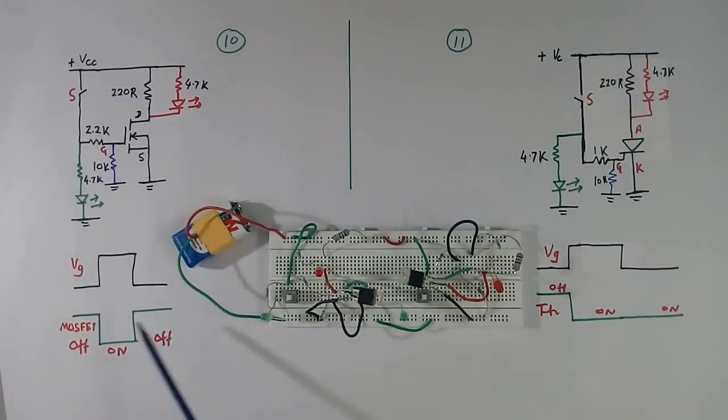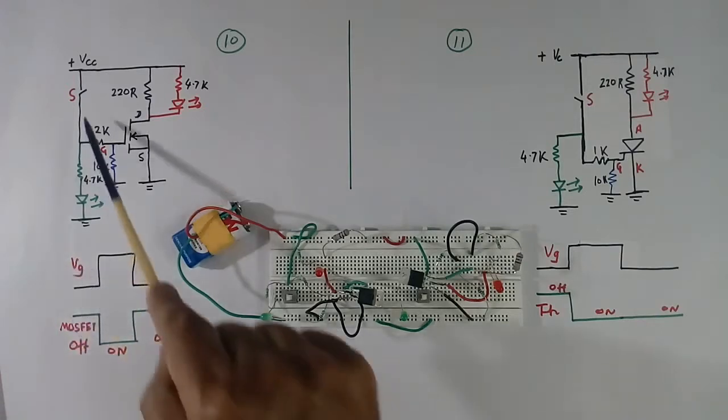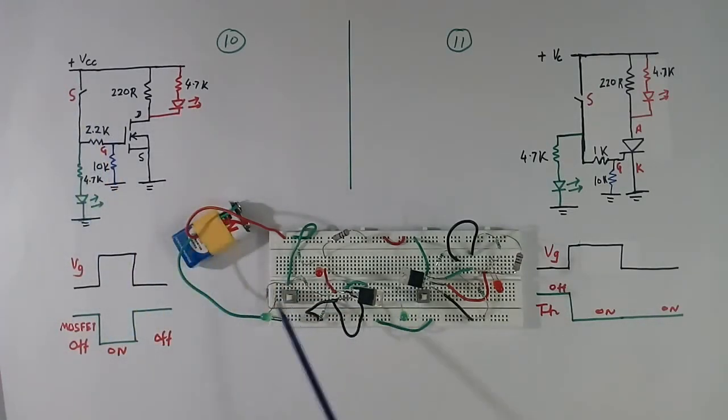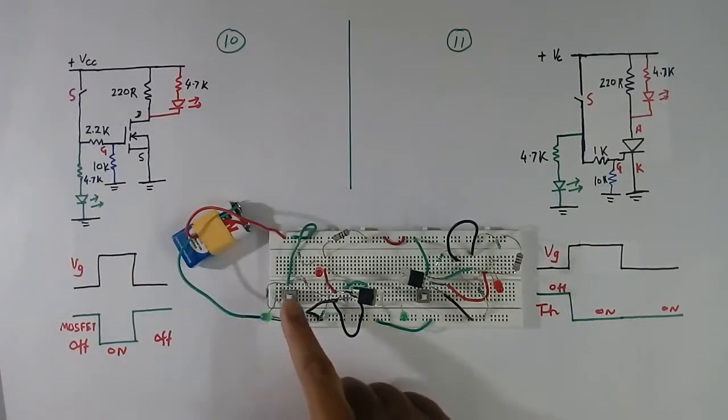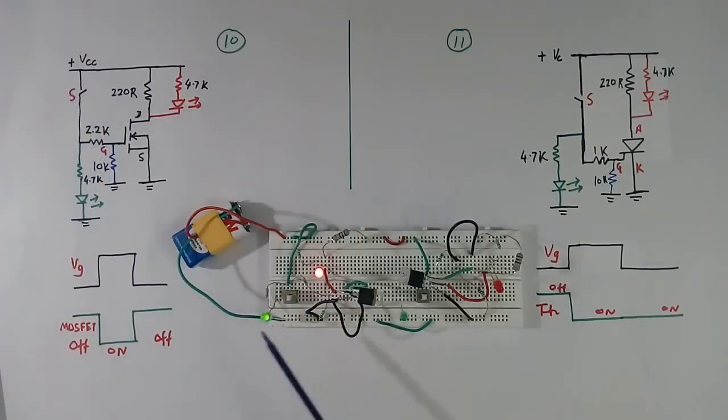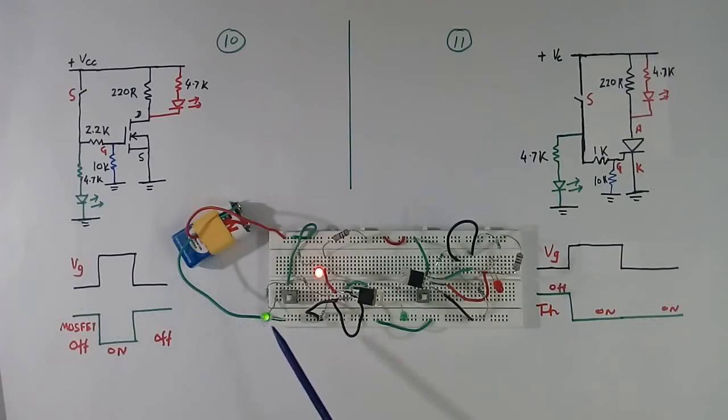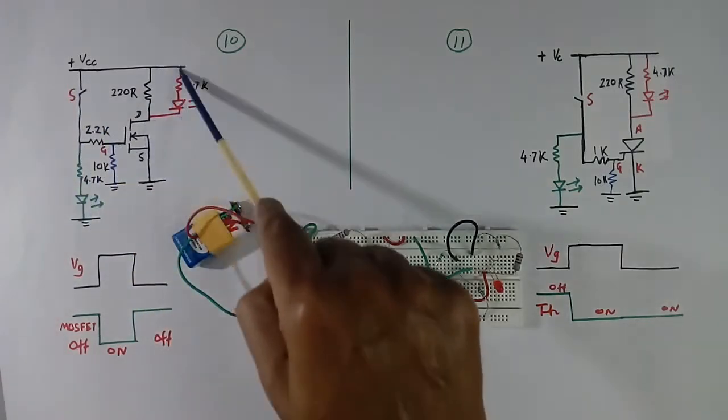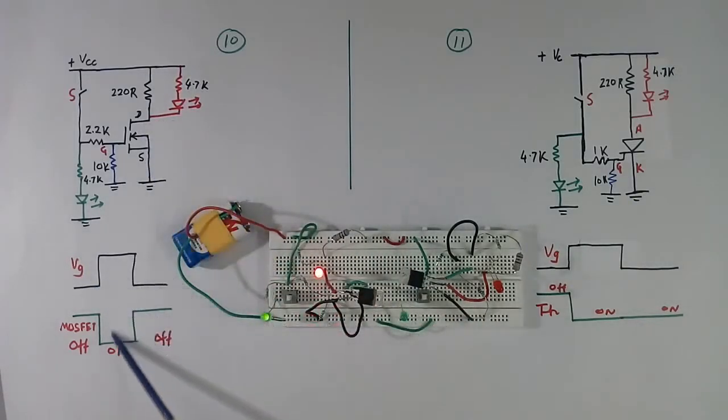Now at present, we are here. Switch is open. Both LEDs are off. Now this switch is this. I will press this. See. This LED indicates green, that gate pulse is going. This indicates that this has become ON. And we are here now. Gate pulse has come and MOSFET has become ON.